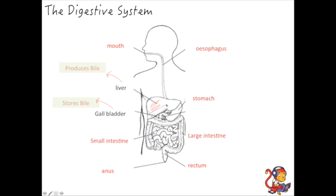The liver is a really large organ that lies just next to the stomach, and off of that organ the gallbladder is actually really small — just a little storage vessel for the bile. The bile is put into the digestive system at the top of the small intestine, and we'll talk about it more in the next video, but it neutralizes the acid from the stomach. As food comes through in an acidic environment, the bile helps to neutralize that acid before it goes into the small intestine.